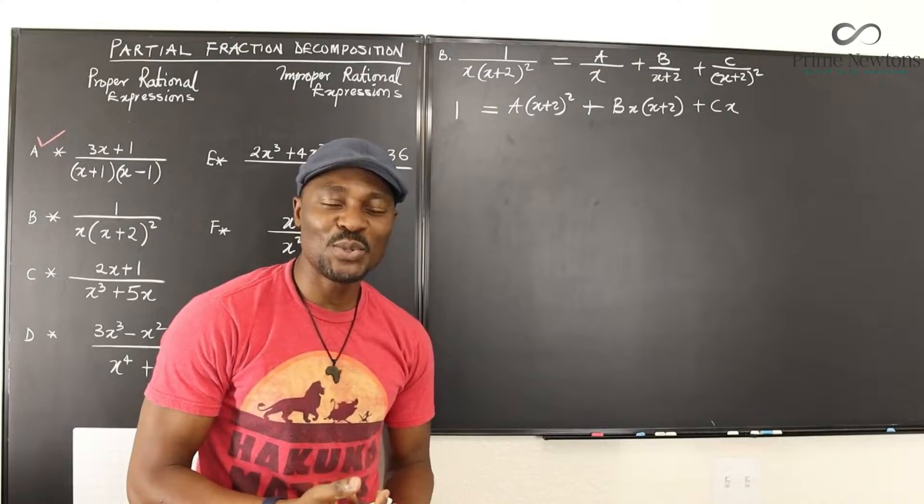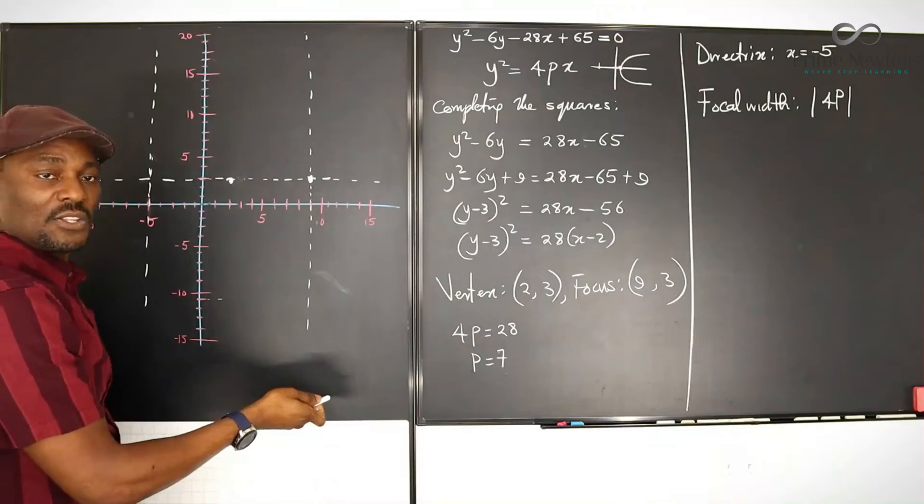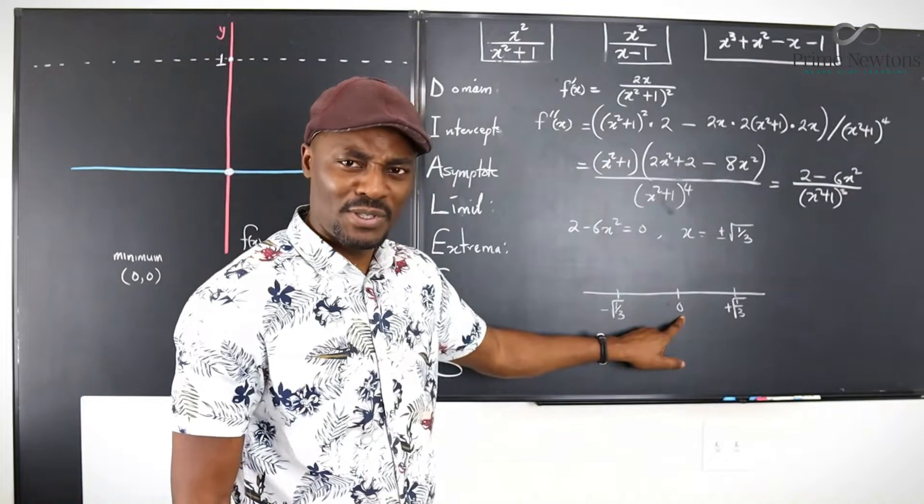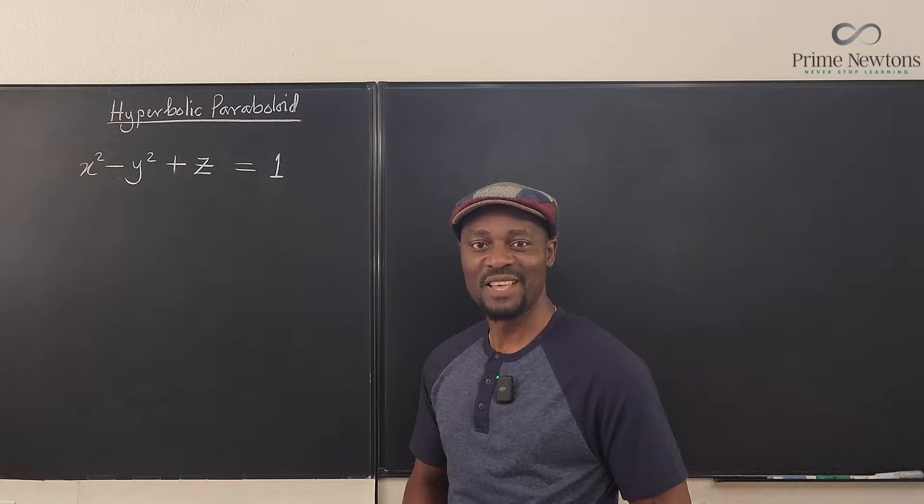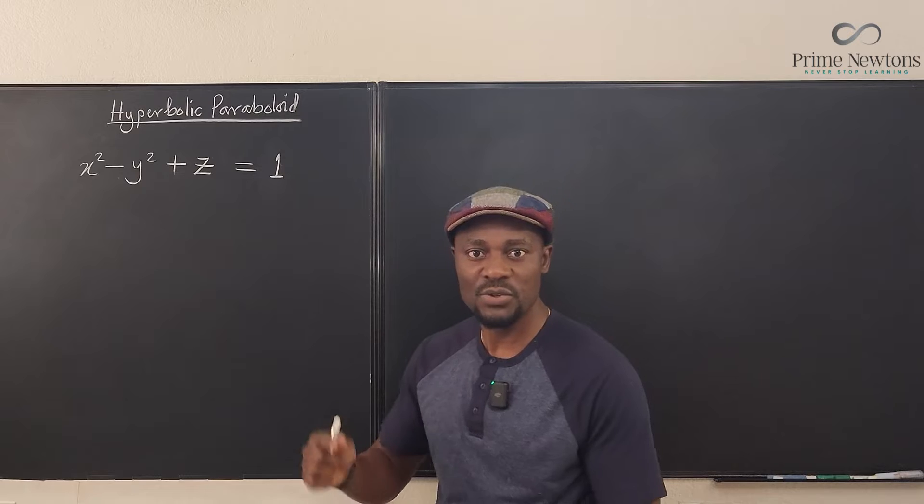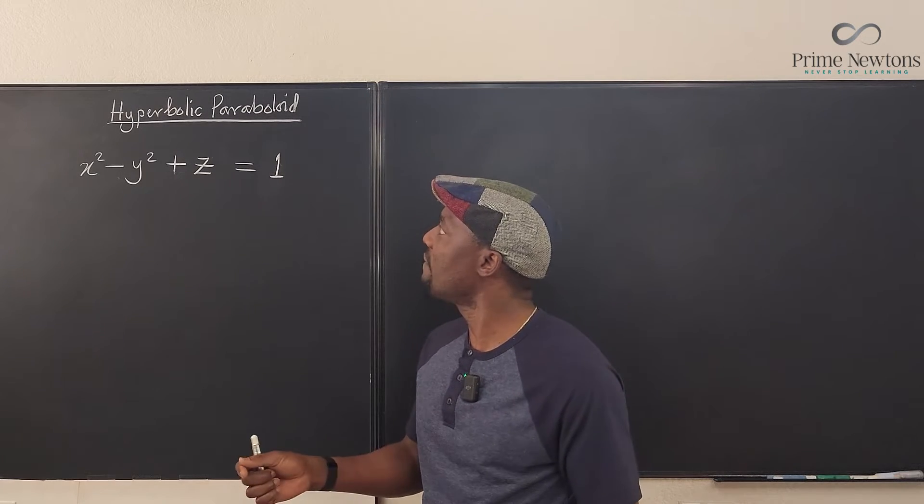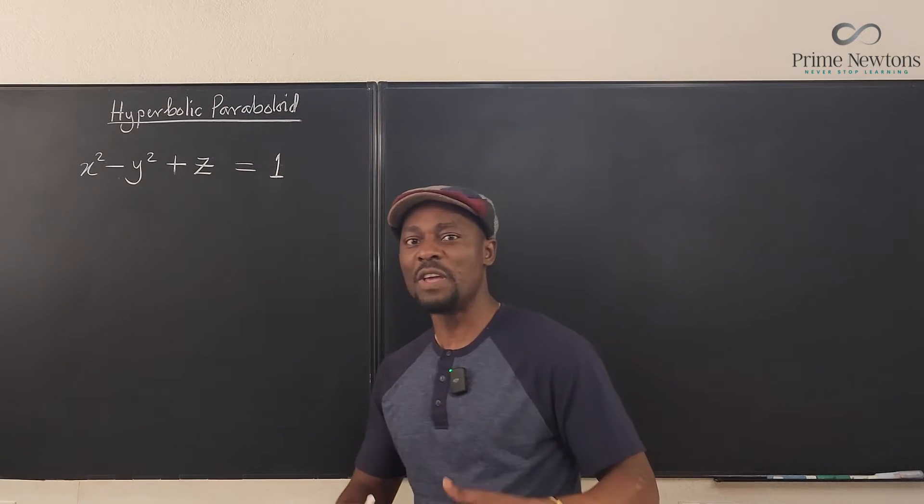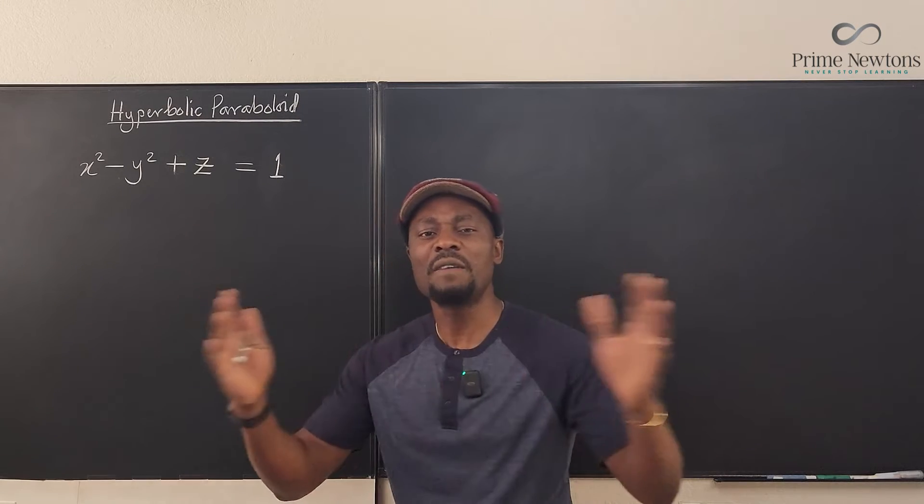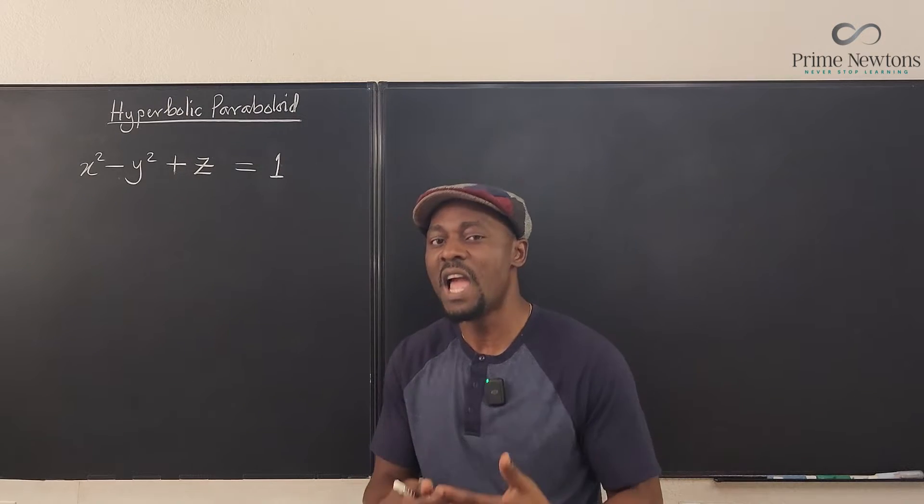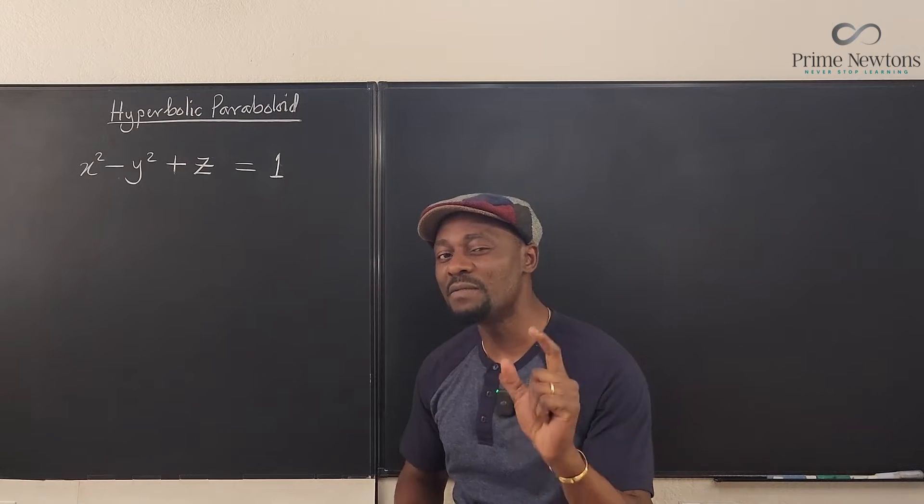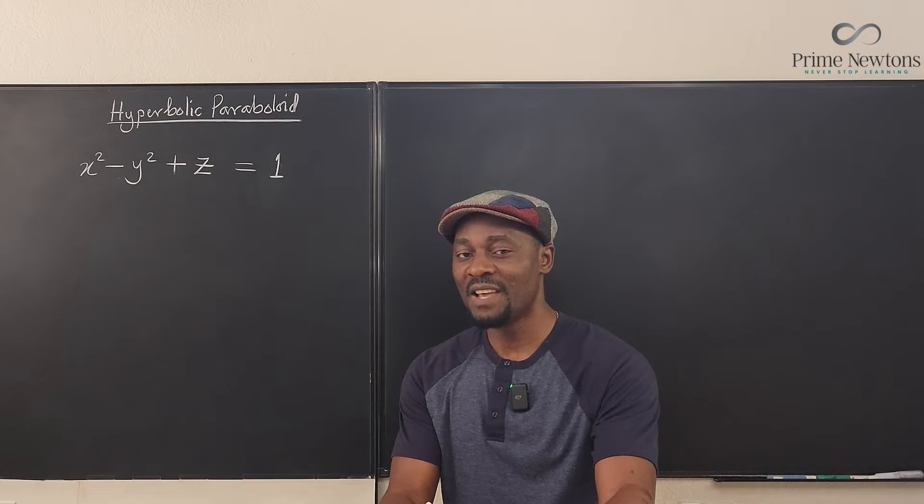Suppose you're given a three-dimensional equation like this where you have x, you have y, you have z. How do you know if what you have is a hyperbolic paraboloid or if it is the equation of a sphere or if it is an ellipsoid or if it is whatever shape you're given or surface you're supposed to identify?